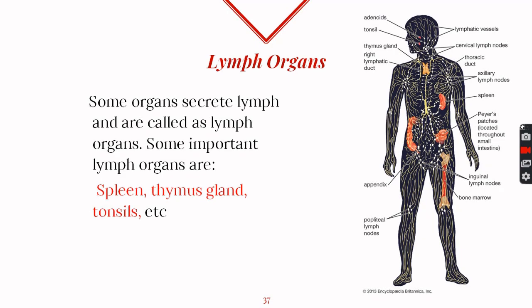Apart from lymph nodes or glands, there are some organs which produce a large number of lymphocytes, so we call them lymph organs. These include the spleen, which is present above the stomach; the thymus gland, which is present in the chest region and is most active in very small children; and the tonsils, which are present in the face region. Their only purpose is to produce large numbers of lymphocytes that can help fight any kind of infection.